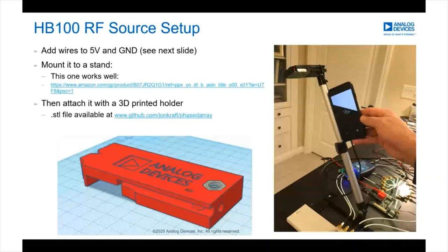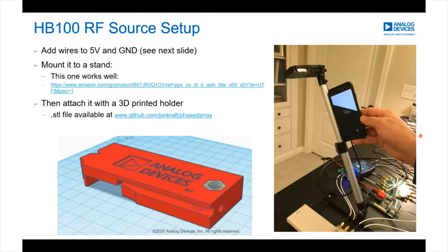I built a little holder for it — there's an STL file if you want to 3D print one for yourself. That holder mounts onto a selfie stand. We'll use the stand through most of the labs. It allows us to center our antenna and then rotate the RF source around it, so we can measure the actual angle and compare that to our beamforming measurements.